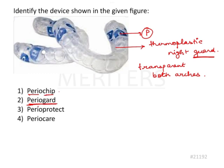The perio chip is definitely not this — it is a chlorhexidine local drug delivery system placed in the gingival sulcus after scaling and root planing. Perio Guard is a chlorhexidine gluconate mouthwash; it is not anything to do with a night guard.